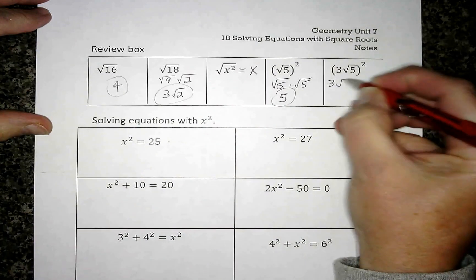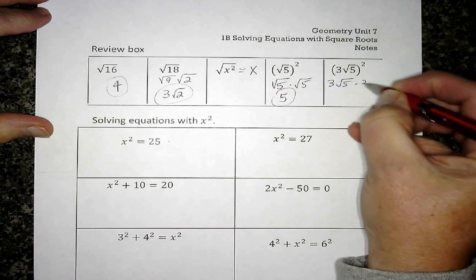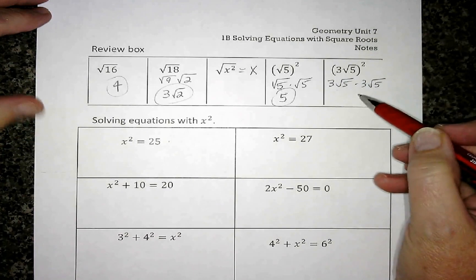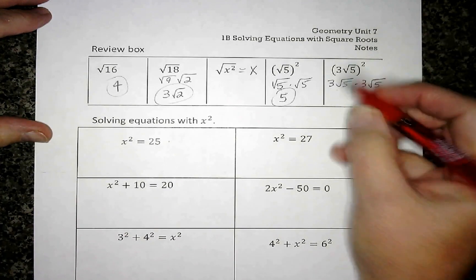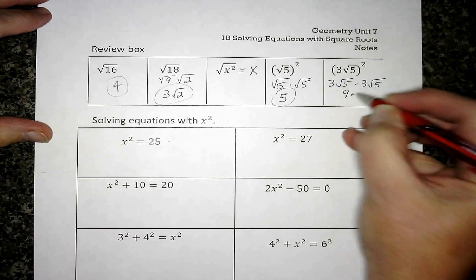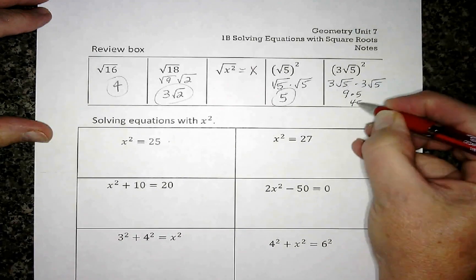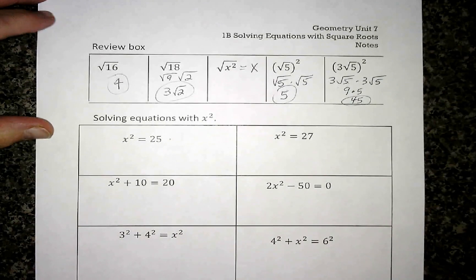And on this last one, if I would write it out using that exponent of 2, this is where we learned our multiplication: number times number, square root times square root. So I have 9 times 5, 45 final answer.